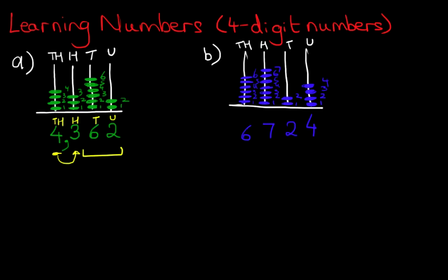So, that is the number shown on the abacus. Again, let's put a little comma over here. Now, how do we read this? Six, seven, two, four. We start on the left-hand side. We say, six thousand, seven hundred and twenty-four. Six thousand, seven hundred and twenty-four.